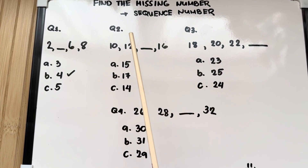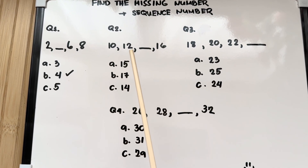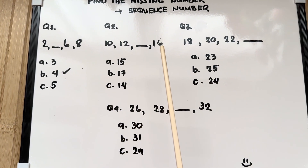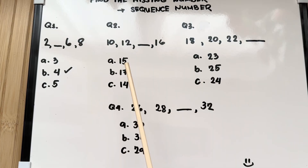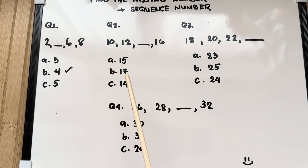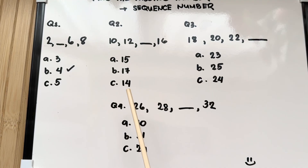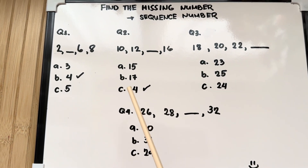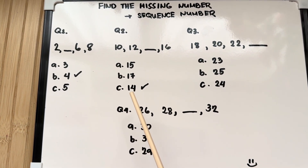Question number 2: 10, 12, blank, 16. Is it letter A: 15? B: 17? Or C: 14? The right answer is letter C: 14.